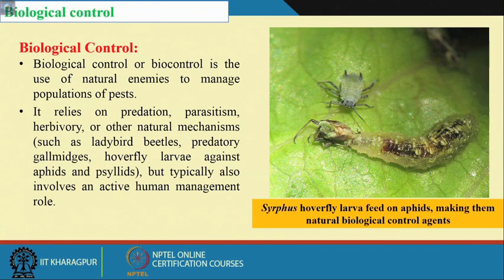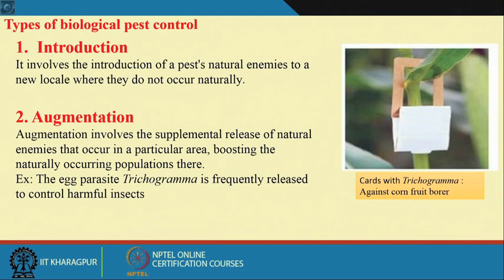There are types of biological control. The first is Introduction, which involves introducing pests' natural enemies to a new location where they do not occur naturally — meaning you are introducing natural enemies to a location where they did not previously exist.